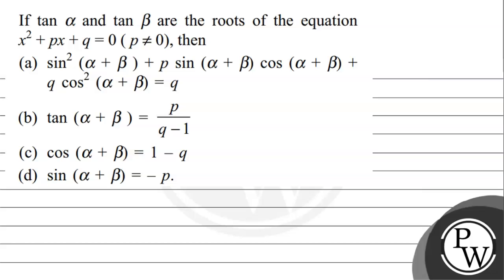Hello. Let us read the question. The question says that if tan alpha and tan beta are the roots of the equation x squared plus p x plus q is equal to 0, where p is not equal to 0. Then option one: sin squared(alpha+beta) plus p·sin(alpha+beta)·cos(alpha+beta) plus q·cos squared(alpha+beta) equals q. Option two: tan(alpha+beta) equals p upon q minus 1. Option three: cos(alpha+beta) equals 1 minus q. Option four: sin(alpha+beta) equals minus p.